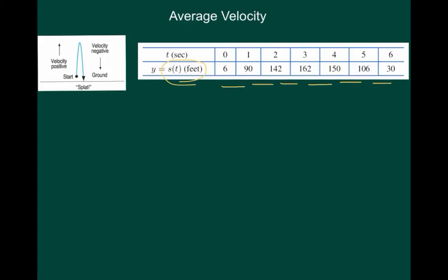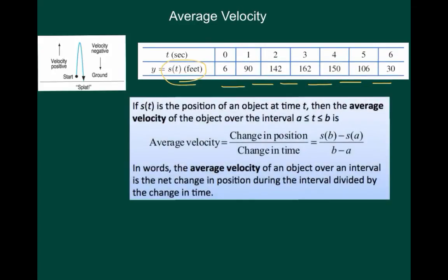So, what is average velocity? If s(t) is the position of an object, then the average velocity is the change in the position over the change in time. Now, don't be fooled. You don't take the average of the velocities at each individual second. You find the beginning position and the ending position, find that difference, and divide by the change in time.